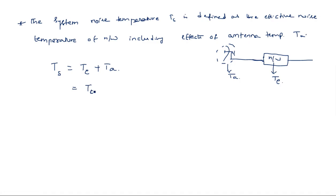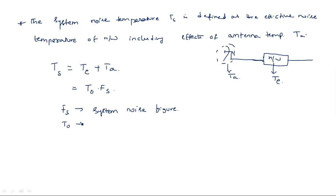This can also be written as TS = T₀ × FS, where FS is the system noise figure and T₀ is room temperature. In this way, the effective noise temperature TE and the system noise temperature TS can be calculated. Thank you.